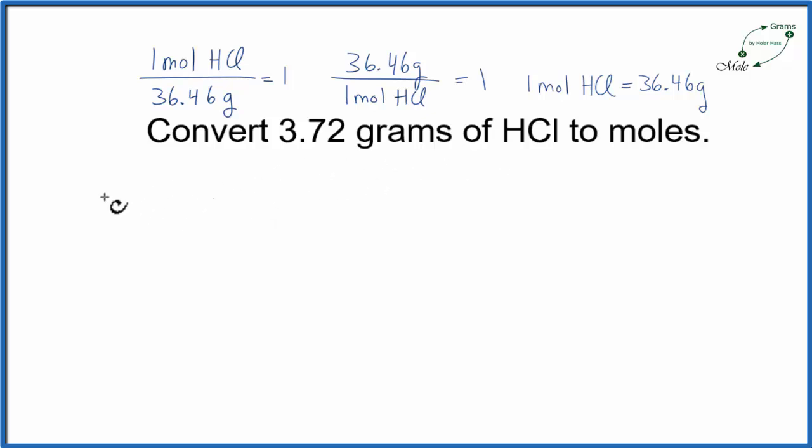I have 3.72 grams, and I want to change it to moles. So I want my grams to cancel out, and I want to be left with moles. So I'm going to choose the conversion factor, one of these, that cancels grams out. To do that, I'm going to need grams to be on the bottom. So I'm going to multiply this by 1 mole of HCl is at 36.46 grams.